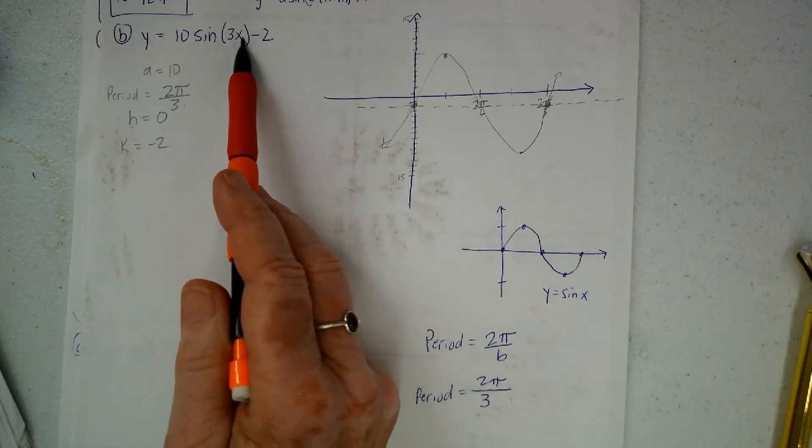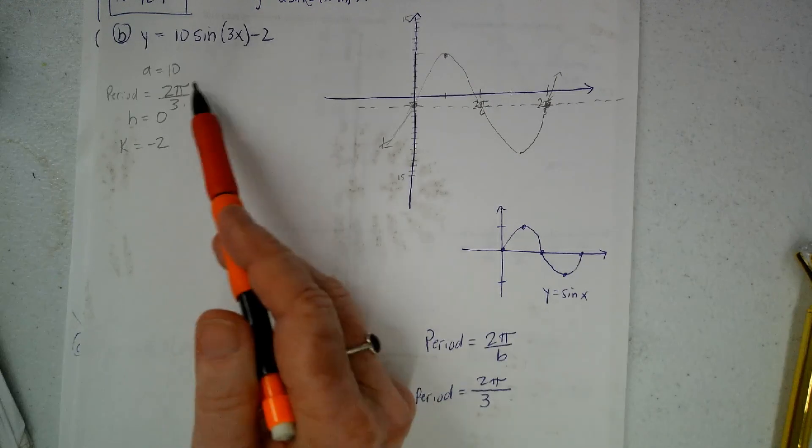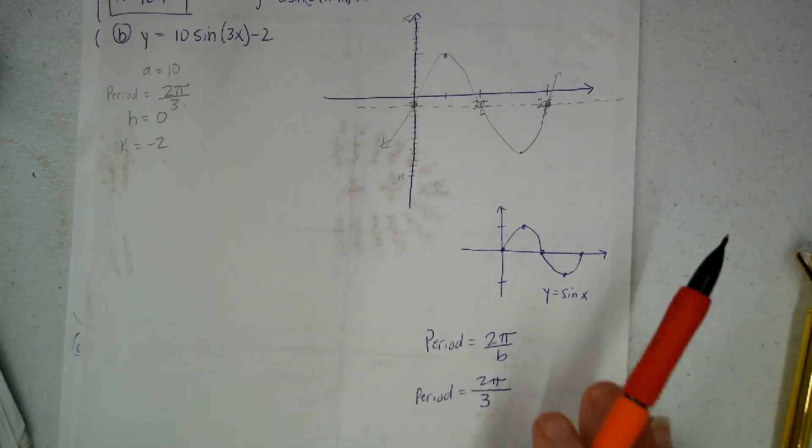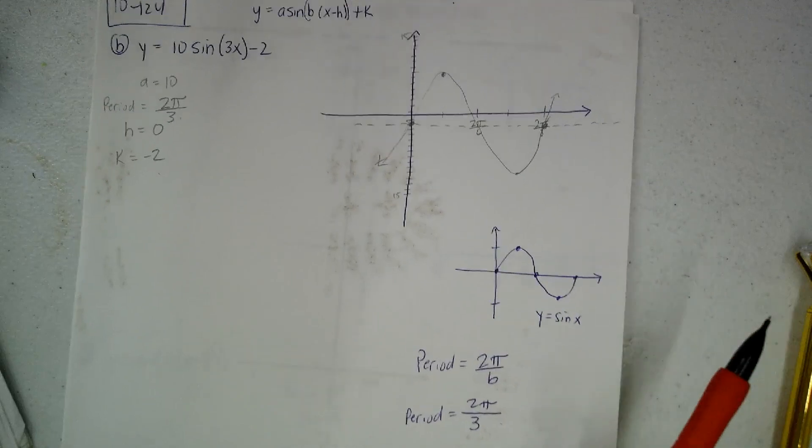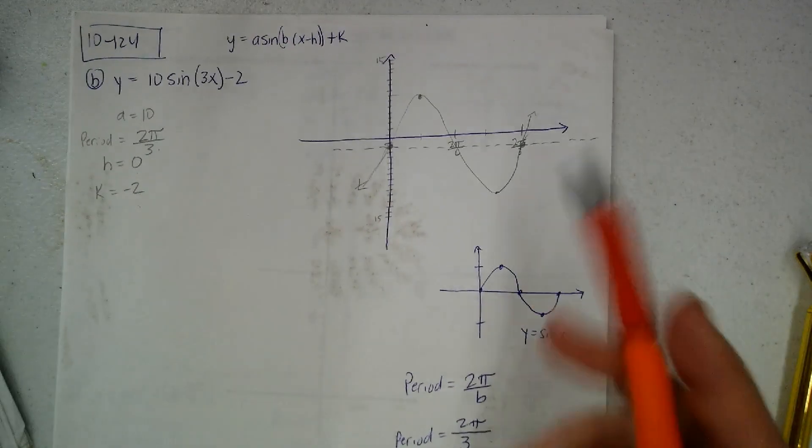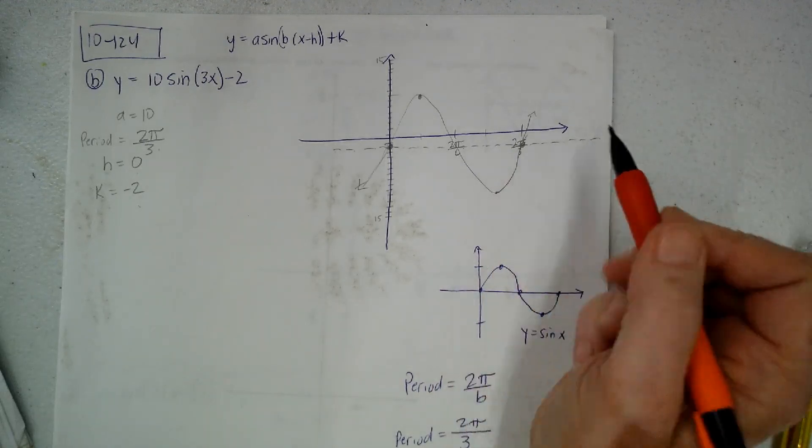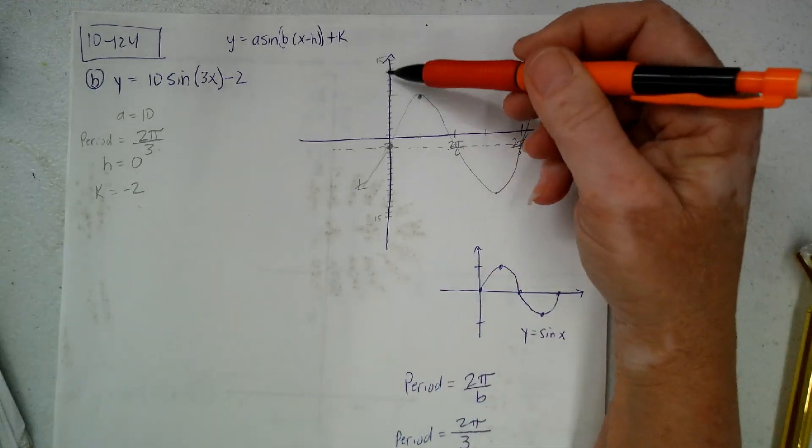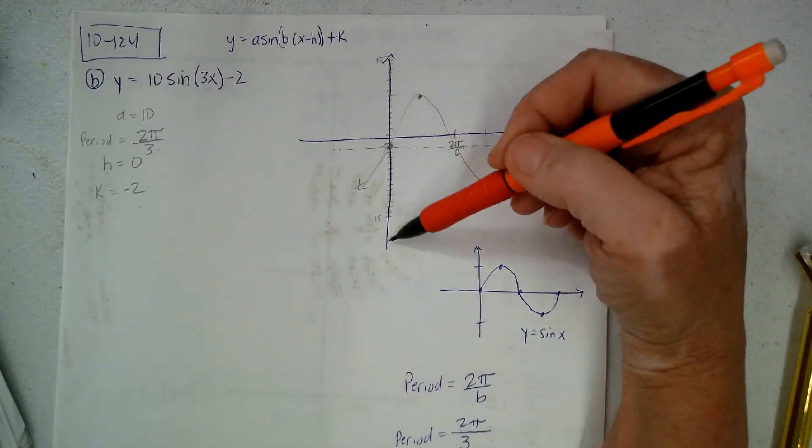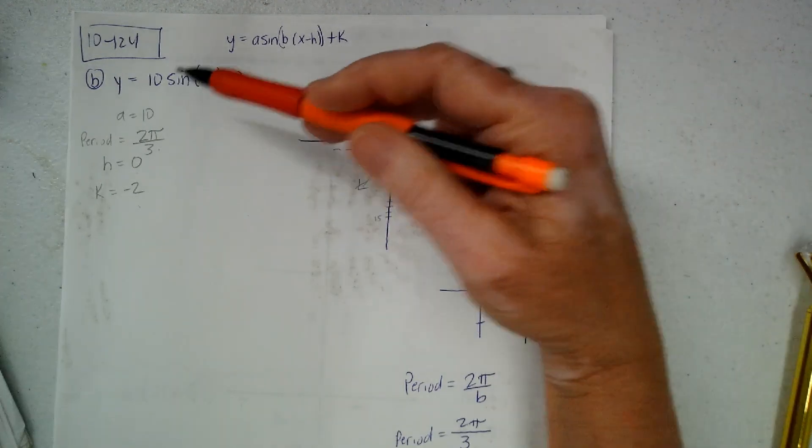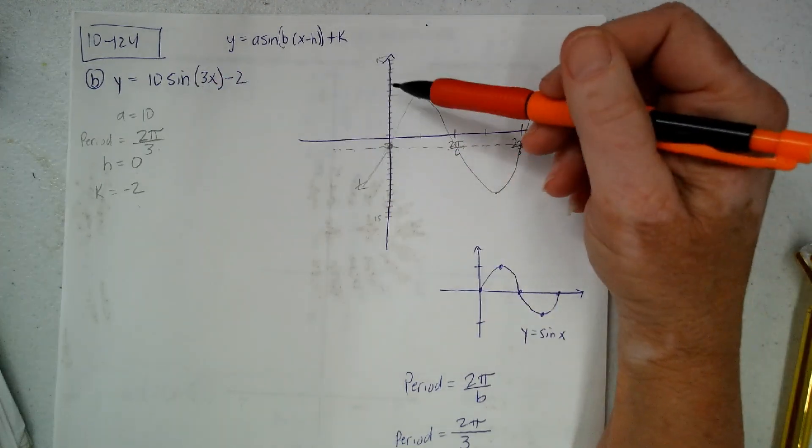H is 0 because there's nothing inside the parentheses for a horizontal shift. K is negative 2. So the first thing I do is I draw a dotted line for K. And then I make sure that I scale my axes so I can go up and down by whatever the amplitude is. In this case it's 10.